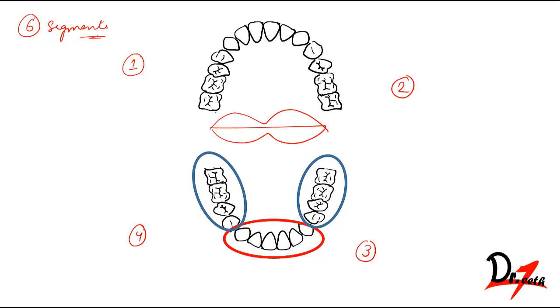We do not divide it into quadrants but into segments. Segment one is distal to the right cuspid. Segment two is mesial to the right and left bicuspid.